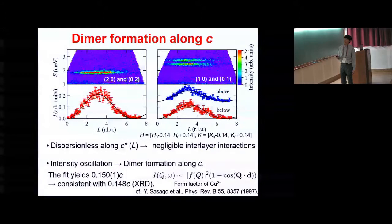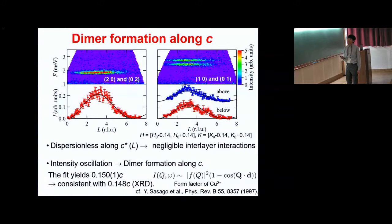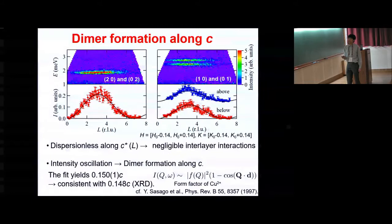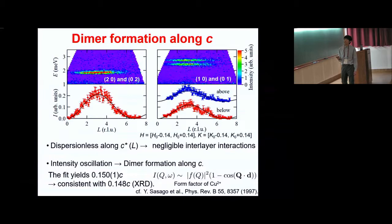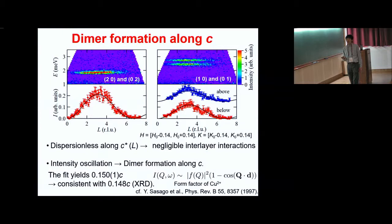I now show the counter maps and the intensity sliced along the C direction. From the upper figure, we can see that the triplon band is dispersionless along the C-star direction, indicating negligible interlayer interactions. From the bottom figure, the intensity is modulated along the C-star direction. This kind of intensity oscillation is frequently observed in spin dimer antiferromagnets, indicating dimer formation along the C-star direction in this compound.